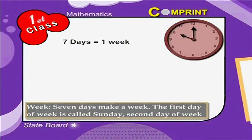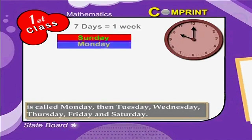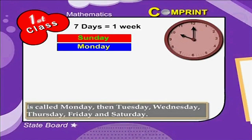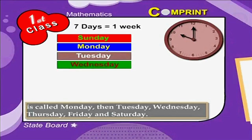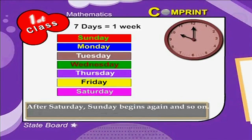7 days make a week. The first day of the week is called Sunday, the second day is called Monday, then Tuesday, Wednesday, Thursday, Friday, and Saturday. After Saturday, Sunday begins again and so on.